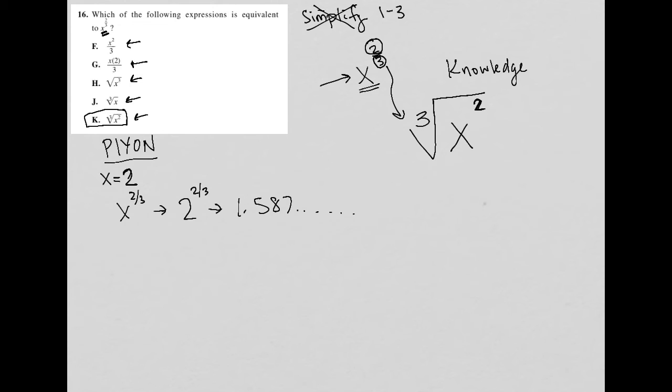So now the next step is to say, if 2 to the two-thirds is 1.587, and this question is asking me to find something that's equivalent to that 1.587, I'm going to plug in x equals 2 into each of these options until I find the one that also gives me 1.587. So just for the sake of time here, we're going to go straight to choice K.